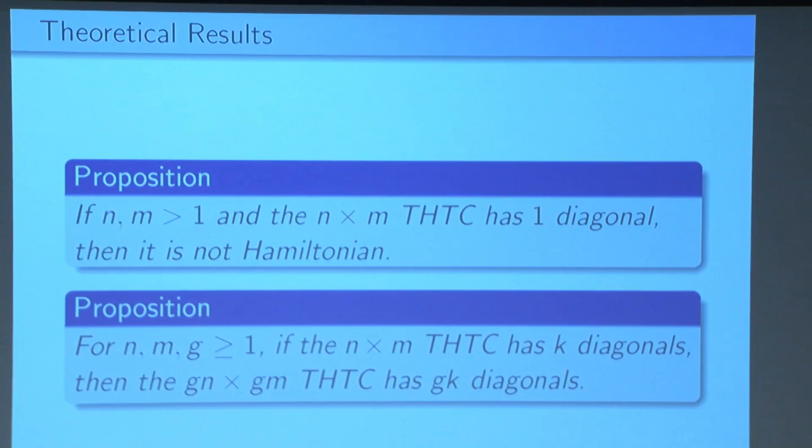Now let me present some of the more important results that we've come up with. So if an N by N two-hole torus checkerboard has one diagonal, unless it has a trivial size, it is not Hamiltonian. This is because if there's only one diagonal, then all the cells must have the same direction. But then we can only visit at most two rows or at most two columns in the checkerboard. That's why the dimensions have to be small.